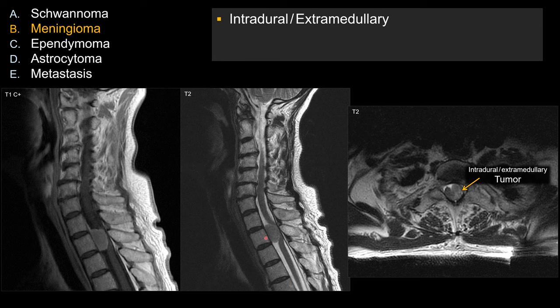First of all, you can clearly see there's a homogeneously enhancing lesion in the spinal canal. Your first task is to decide: is it intradural or extradural? If it's intradural, is it extramedullary or intramedullary? In this case, you can see the lesion is clearly inside the thecal sac — so intradural — but it's outside of the spinal cord. The mass is on one side, the spinal cord is being pushed to the other side, and you can see the spinal cord is severely compressed. So it's an intradural, extramedullary lesion.